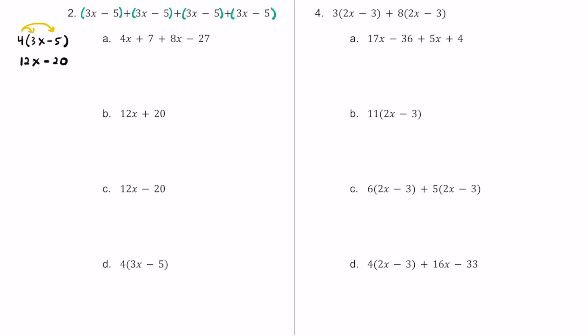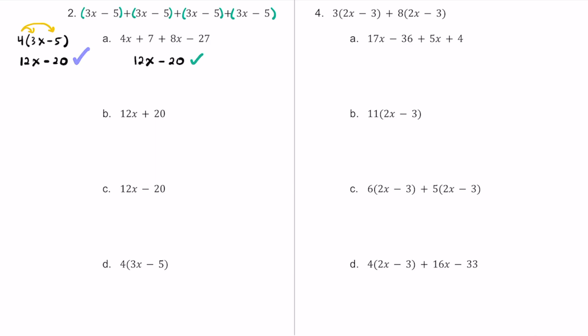For answer choice A, let's take the expression 4x plus 7 plus 8x minus 27 and combine like terms. 4x plus 8x is 12x — so far so good. Then positive 7 plus negative 27, which is taking away 27, equals negative 20. So this does work because we get 12x minus 20, which matches the original.